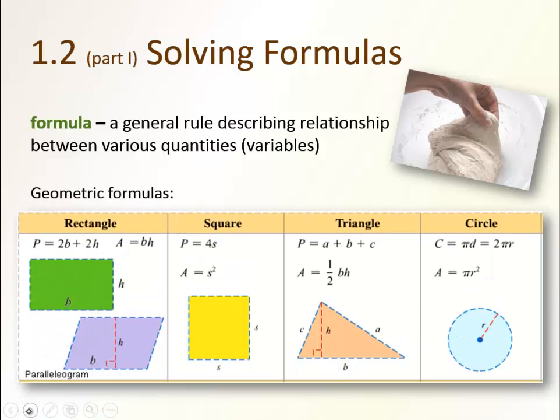We are already familiar with various geometric formulas. Let's review them. For example, if we have a rectangle or parallelogram, we may talk about area or perimeter. Recall that the perimeter of an object is the length around the object. So in the case of a rectangle, you take twice the base and twice the height, so 2b plus 2h.